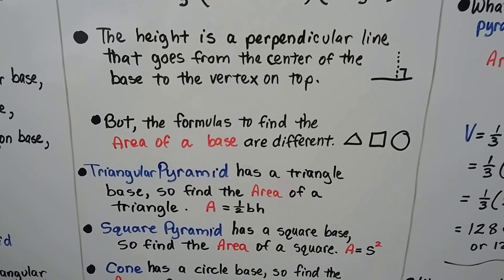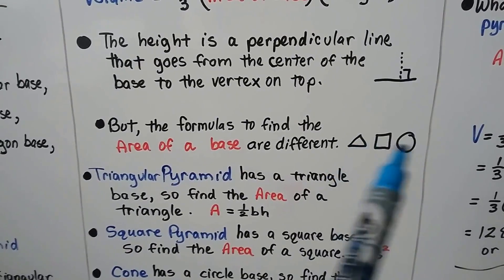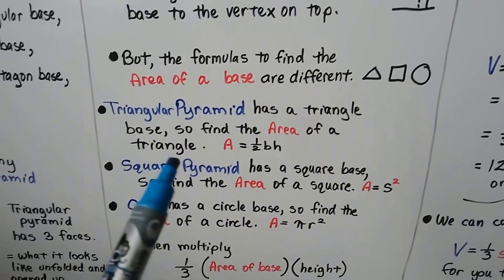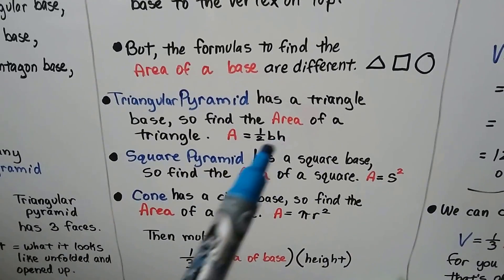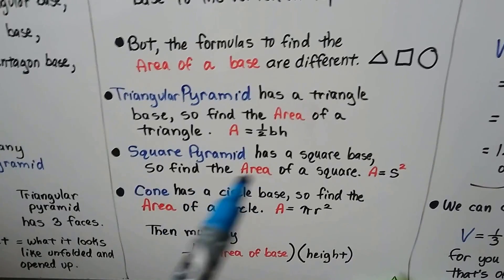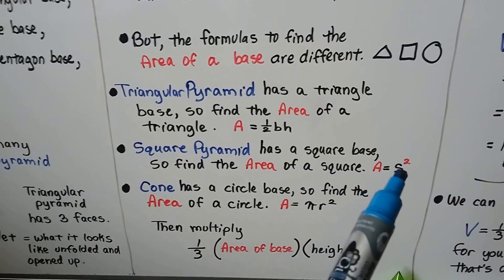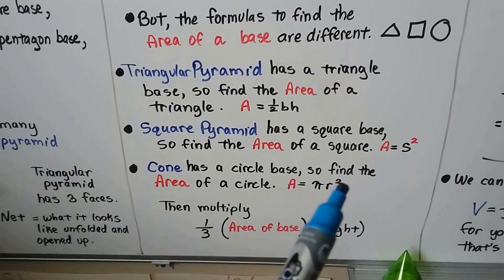But the formulas to find the area of a base are different. The area of a triangle is square or a circle, they're different formulas. So for a triangular pyramid, it has a triangle base, so we find the area of a triangle, A equals half base height. For a square pyramid, the definition of a square is all the sides at the same length, so it's going to be side times side, S squared. For the area of a circle, we use pi R squared.